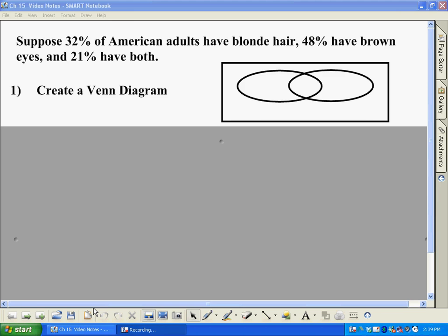We're going to be taking a look at some of the more basic ideas of probability here today. We have a little scenario here for you. Suppose 32% of American adults have blonde hair, 48% of them have brown eyes, and 21% of them have both. First off, we could do what's called creating a Venn diagram.